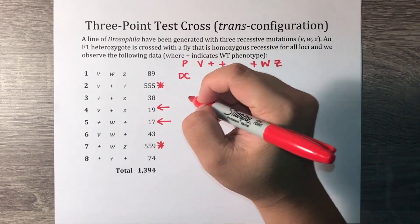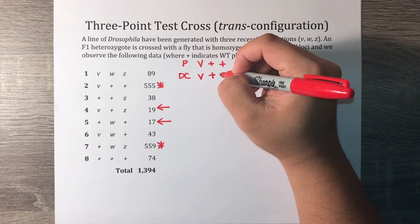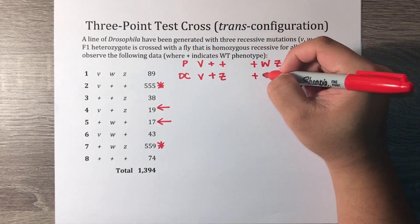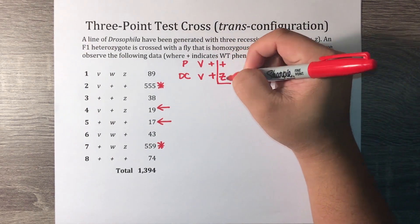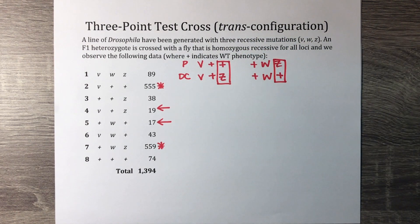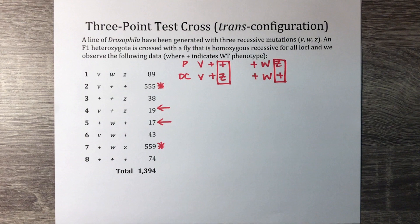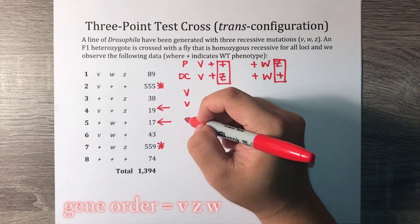Like in our previous examples, we compare the parental and double crossover phenotypes to determine the middle locus. Between the phenotypes recessive V, dominant W, dominant Z and recessive V, dominant W, recessive Z, we see that both progeny groups share a recessive V allele and a wild-type W allele, but the allele differs for gene Z. These attributes indicate that crossing-over events occurred at loci V and W, but not at locus Z. Therefore, the middle locus is Z, and our gene order is V, Z, W.